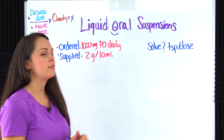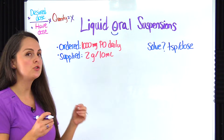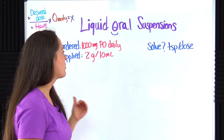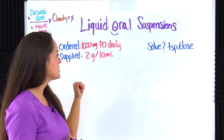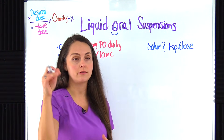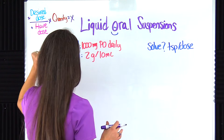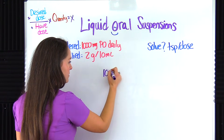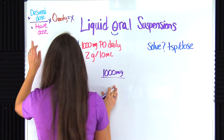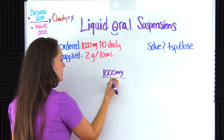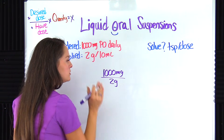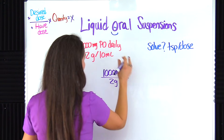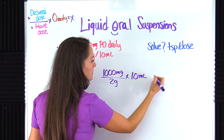This problem says we're ordered to give 1,000 milligrams by mouth daily. We're supplied with a bottle that reads 2 grams per 10 mLs, and we need to solve for teaspoons per dose. I'm automatically looking at this and thinking: I've got to get to teaspoons, and I'm in milliliters over here on hand — so I know I'll have to do some converting. Let's plug into our formula. Desired dose is 1,000 milligrams on top, over what we have on hand: 2 grams. Those units don't match, so we'll need to convert. Times the quantity: 10 mLs equals x.